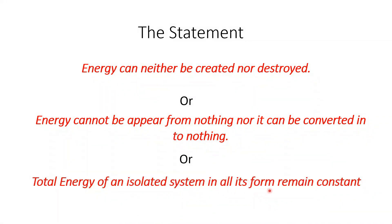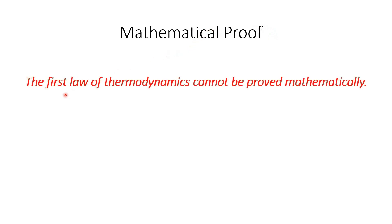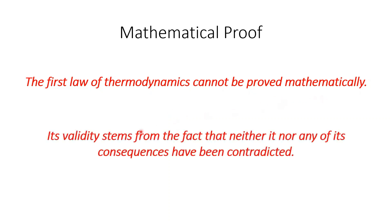Regarding the mathematical proof of the first law of thermodynamics, an important point is that the first law cannot be proved mathematically. Its validity stems from the fact that neither it nor any of its consequences have been contradicted. It is similar to the universal law of gravitation — its validity comes from the fact that none of its applications or corollaries have ever been contradicted.